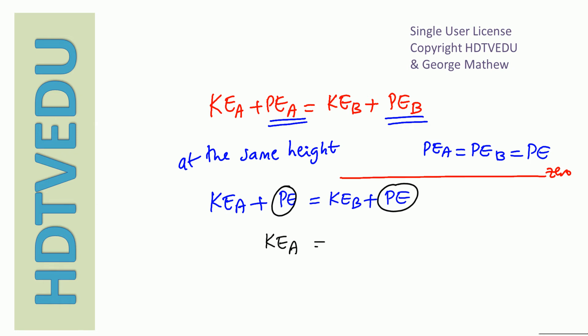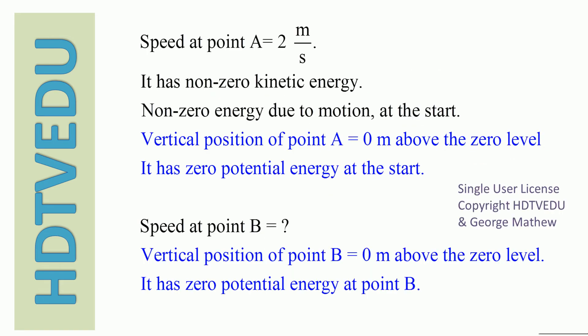That means kinetic energy at A equals kinetic energy at B. The mass is the same, so the speed has to be the same. Speed at point A is 2 meters per second — it has non-zero kinetic energy at the start. The vertical position of point A is 0 meters above the zero level, so it has zero potential energy at the start.